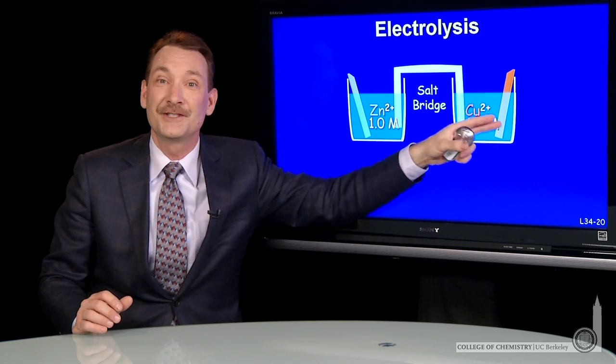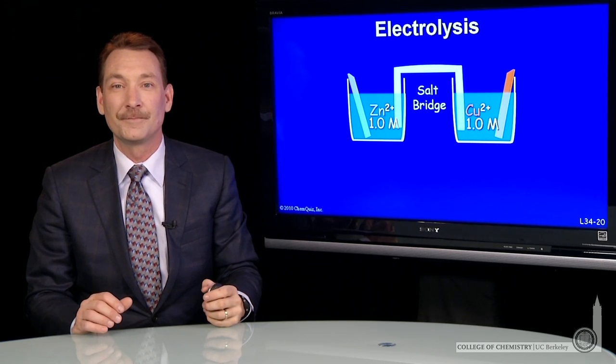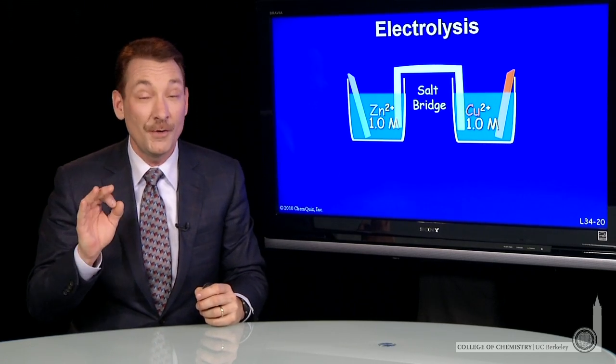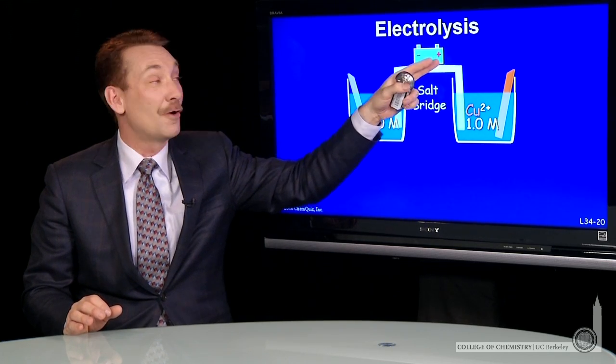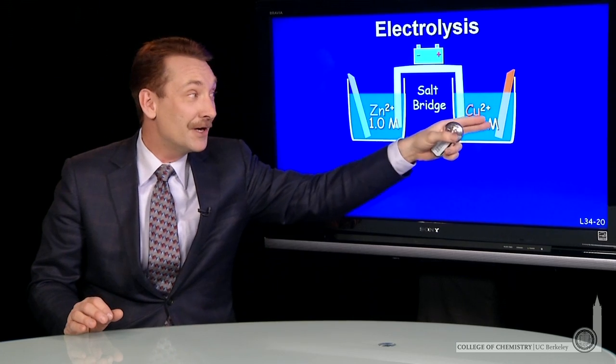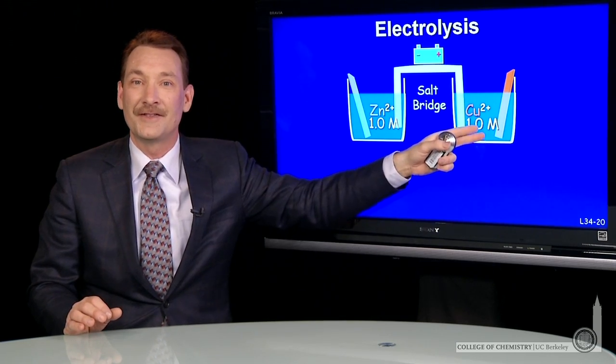At the copper electrode, copper ions are reduced to copper metal. We can make that reaction go in the opposite direction if we take a battery or another half cell or set of half cells that have a higher natural potential than the copper-zinc.